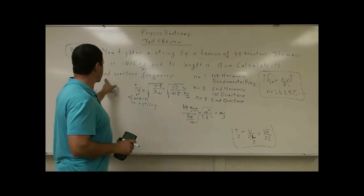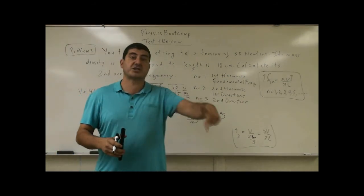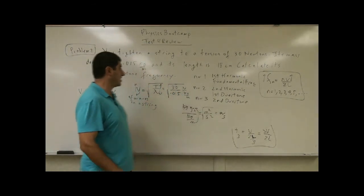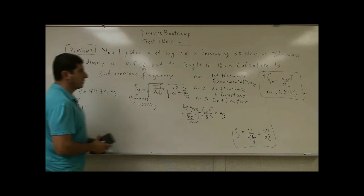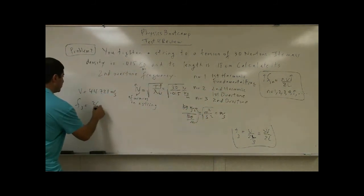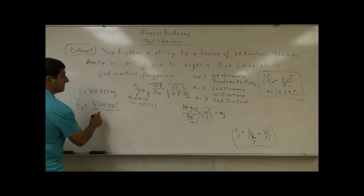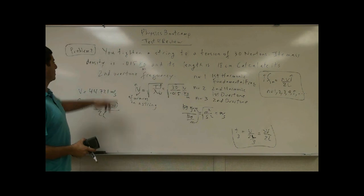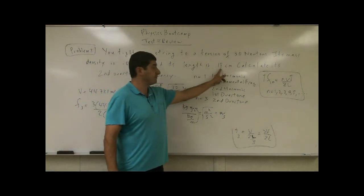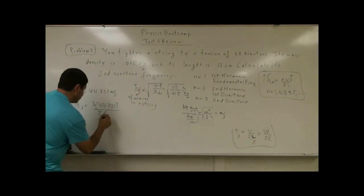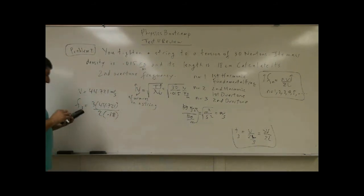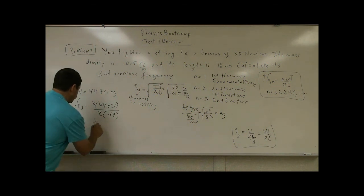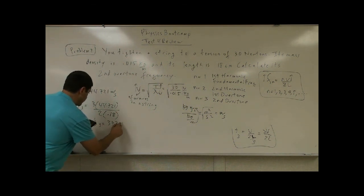So now if I want to calculate the frequency second overtone, remember the first overtone always starts with the second harmonic. So the second overtone is N is 3. So we have to do F of 3. Then we're going to put this equation. We put N equals 3. Velocity 44.721. We divide that by 2. Now, what's the length of the string? The length of the string is 18 centimeters. So we convert that to meter, which is 0.18 meter. So we go 44.721 times 3 divided by 2, divided by 0.18.